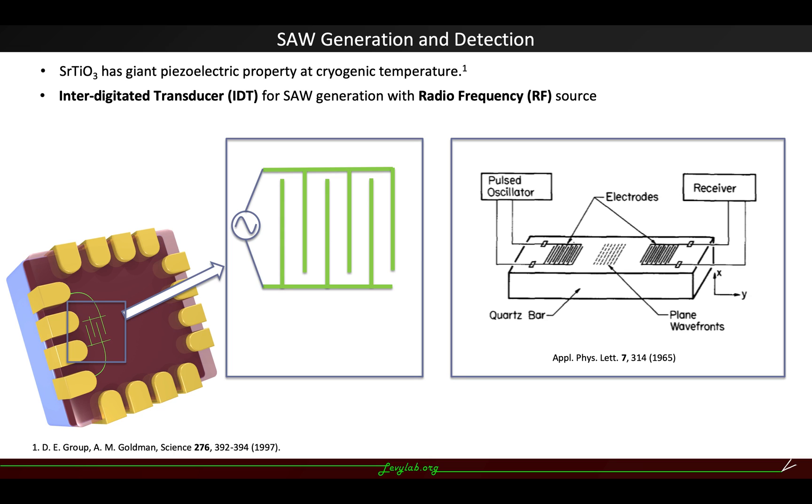With piezoelectric property, the most common way to generate surface acoustic wave is using this interdigitated transducer device. Basically, it's a metallic comb structure. When we apply positive and negative voltage on each side,